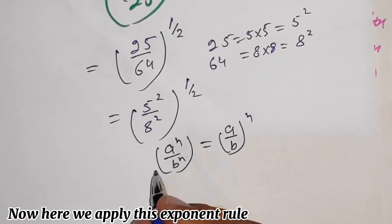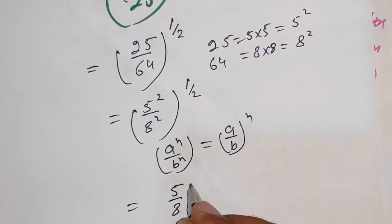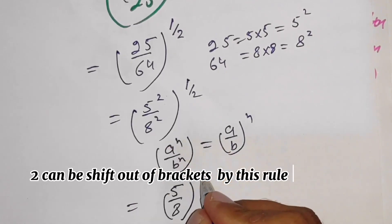Here we apply this rule: 5 over 8. The 2 can be shifted out of brackets by this rule, 1 over 2.